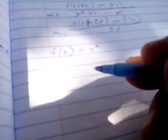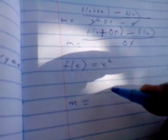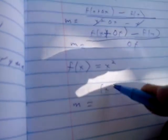You say, slope between the two points on a parabola is equal to x plus delta x quantity squared minus x squared over delta x. And then that will equal x squared plus two delta x x plus delta x quantity squared minus x squared over delta x.